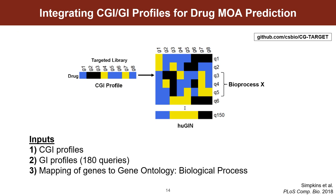Now that we have the bortezomib CGI profile, the next step would be to predict drug mode of action by integrating its profile with genetic interaction profiles. This involves using a tool called CGTarget, developed by a previous grad student in Chad Myers' lab. The idea is that you need three inputs: one is the CGI profile; two would be the GI profiles, which we grab from a project ongoing with our collaborators at the University of Toronto, where they have 180 queries or rows of this matrix filled out; and then we map these genes to GO biological processes so that we can make process-level predictions for the drug in question.